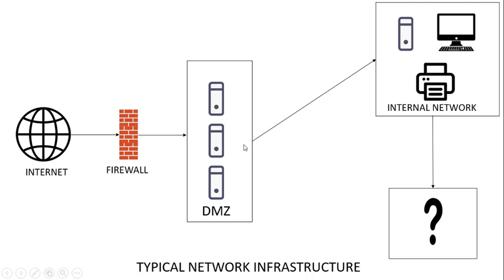Then we have the internal network, which contains the normal office systems — servers, computers, printers, and the like. There is also another network which we don't actually know what's in it. It's probably closed to us and we don't know what exactly is there, which is why there's a question mark.